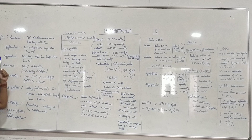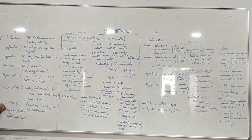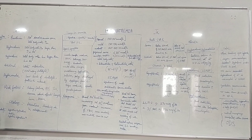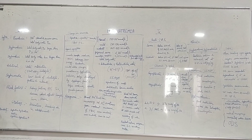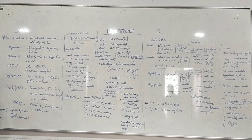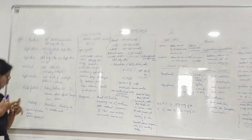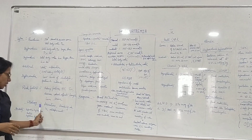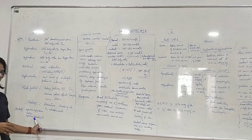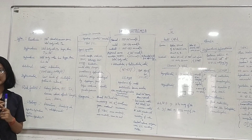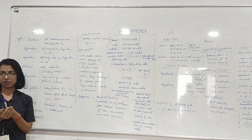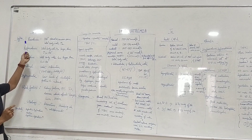Before explaining risk factors and signs and symptoms, let me explain the types of hyponatremia. There are two categories: one based on volume status in the body, and second based on osmolarity. Based on osmolarity, there are three types: hypertonic hyponatremia, isotonic hyponatremia, and hypotonic hyponatremia. Among these three, hypotonic hyponatremia is considered the true hyponatremia.